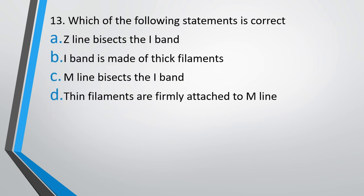Question number 13. Which of the following statements is correct? (A) Z line bisects the I band, (B) I band is made of thick filaments, (C) M line bisects the I band, or (D) thin filaments are firmly attached to M line. The correct answer is option A — Z line bisects the I band.